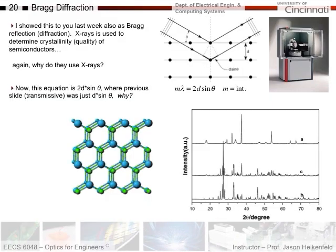Let's go back to Bragg diffraction, used for x-ray analysis of materials with layers of atoms. The equation for the crystallinity of a material is m·lambda = 2D·sin(theta), not just D·sin(theta). The factor of 2 arises because this is reflective mode — with spacing D, the x-ray goes in and comes back out, traveling 2D total. The path length is doubled, hence the 2D in the equation. You look at the diffracted intensity versus angle and use the diffraction peaks to classify different materials.